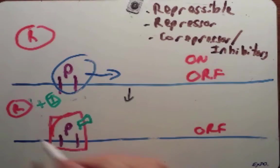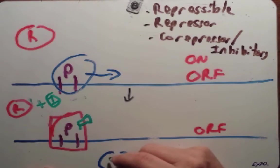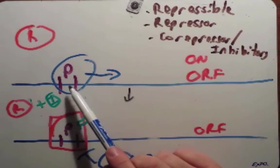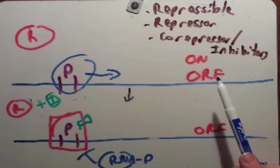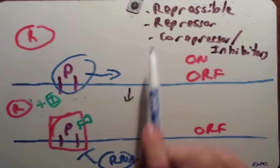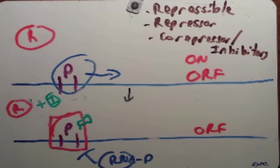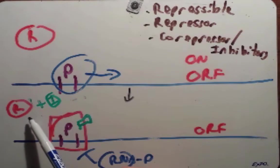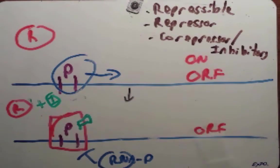Now that the repressor is bound — because it has this inhibitor attached to it — it prevents RNA polymerase from having access to that promoter. So what happens in this system: RNA polymerase is on the promoter making RNA in its normal on state. Repressors are around, but in this setup the repressor is unable to bind DNA. When a signal is needed to turn the gene off, an inhibitor binds to the repressor, an allosteric change occurs, which now allows the repressor to bind to the promoter, preventing RNA polymerase from binding and effectively turning the gene off.